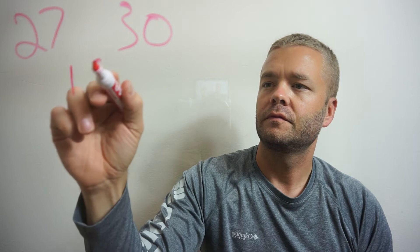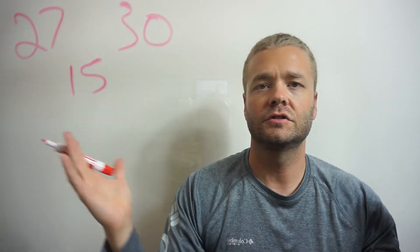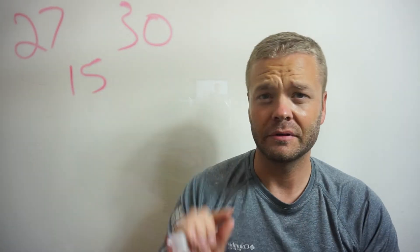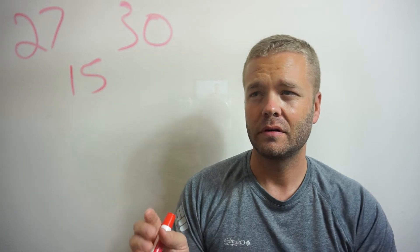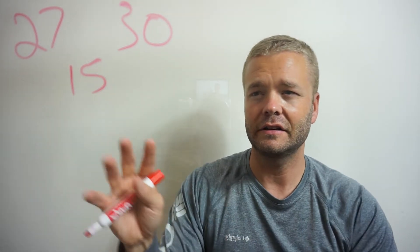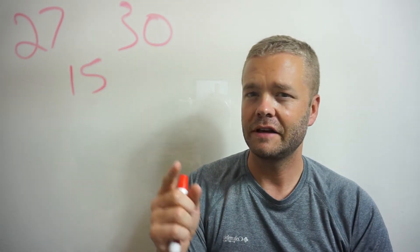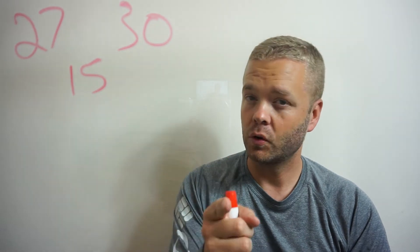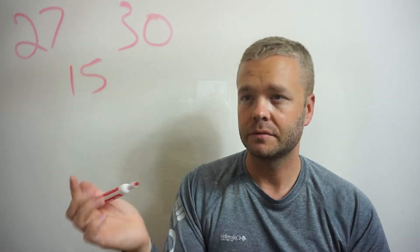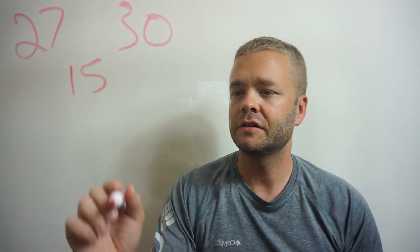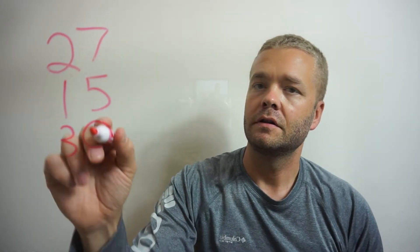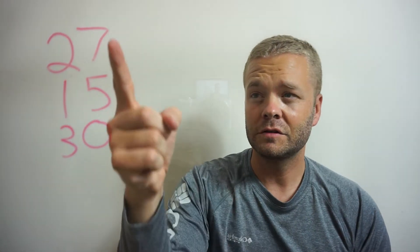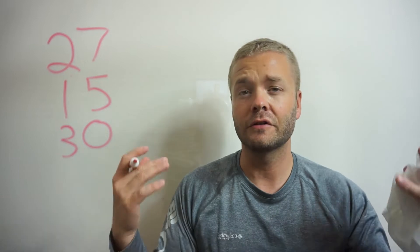27, 30, 15. Just stop right there. I have three numbers — it doesn't help when they're scattered like this. What helps is if I put them on top of each other according to place value. So 27, 15, and 30 would look like this: the ones place values on top of the ones, and the tens on top of the tens. It makes it a lot easier.